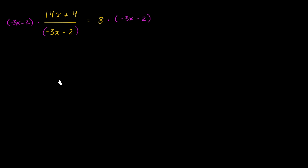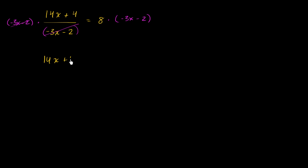What does that do for us? On the left-hand side, you have this (negative 3x minus 2) over (negative 3x minus 2) — they will cancel out. And so you're left with, on the left-hand side, your 14x plus 4.